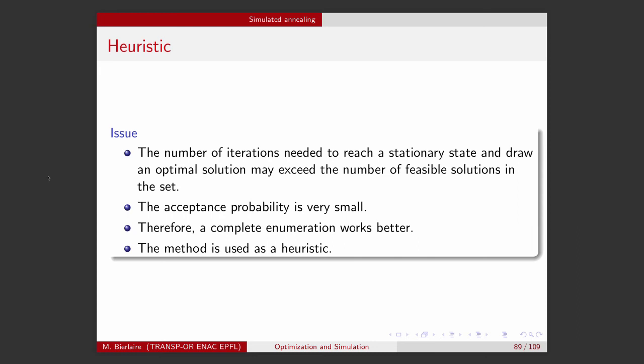In this context, the lambda parameter will be called the temperature, and the name simulated annealing comes from an analogy with metallurgy. I refer you to the lecture on heuristics for a more elaborate discussion. The key thing here is to understand that the idea of simulated annealing is derived from the Metropolis-Hastings algorithm — this idea of exploring the space and deciding to accept or reject a candidate depending on its quality.